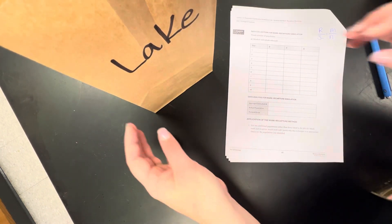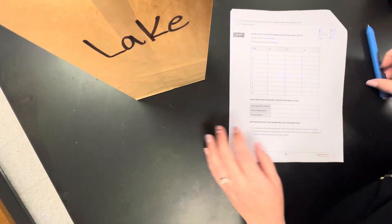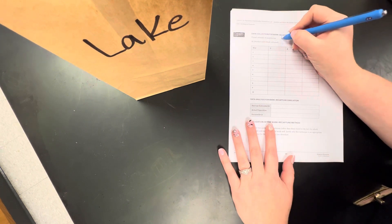So what we have here is a paper bag that represents our lake. And if you can look inside, it is full of beans. Okay, so the first thing we are going to do is get a visual estimate. So I am going to say there are about 100 beans in here.